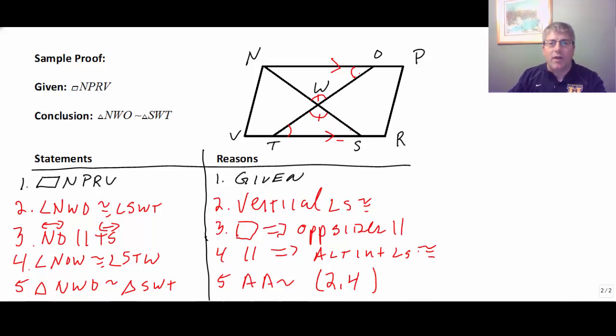We have proved those two triangles similar by angle angle. Now we could have also done the other side. We could have done, you know, this angle congruent to that other one, angle ONW. But we didn't need to do that. We didn't need the third angle. But any two of these three would have done the job and gotten us angle angle. And that would prove the triangle similar.